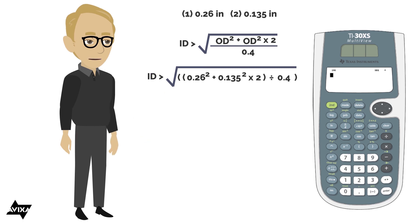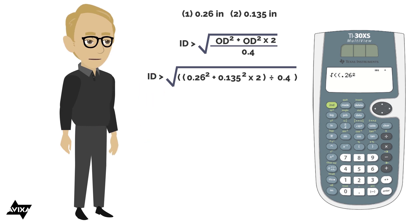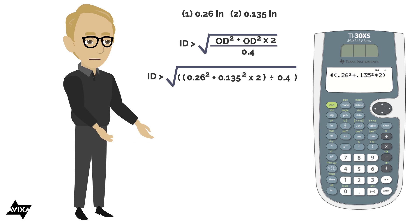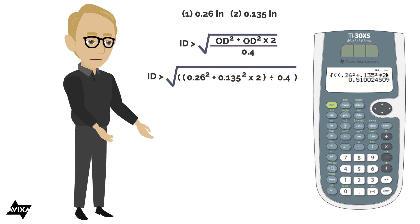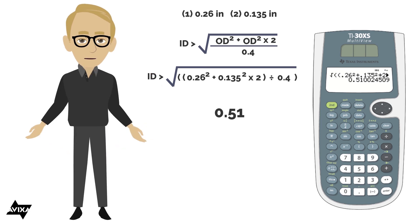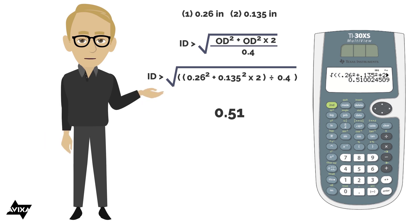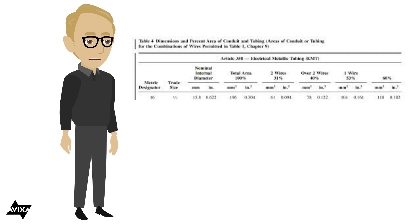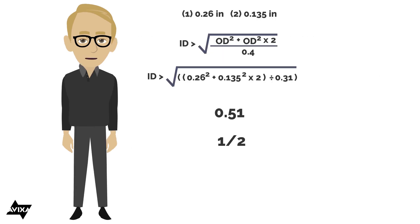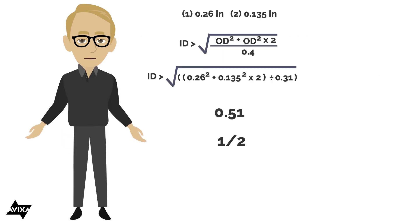Let's clear and enter it: open the square root function, then open another parenthesis, enter 0.26 squared plus 0.135 squared times two, close that inner paren, divided by 0.4, then close the last paren. Hit enter, and I need 0.51. Comparing to the chart — I need something larger than 0.51, and 0.622 meets that criteria, so I can go all the way down to a trade size one-half. Trade size one-half will work for this. That's how we work conduit capacity calculations.